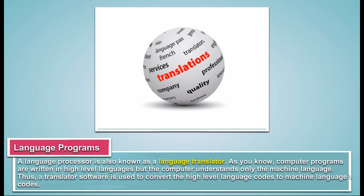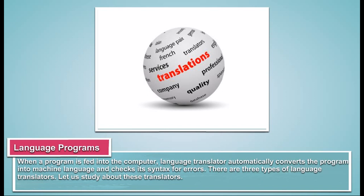Language Processors: A language processor is also known as a language translator. Computer programs are written in high-level languages, but the computer understands only machine language. Thus, a translator software is used to convert the high-level language codes to machine language codes. When a program is fed into the computer, the language translator automatically converts the program into machine language and checks its syntax for errors. There are three types of language translators.